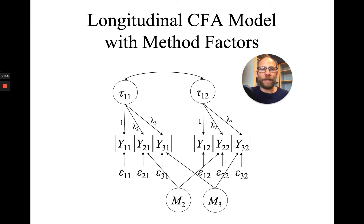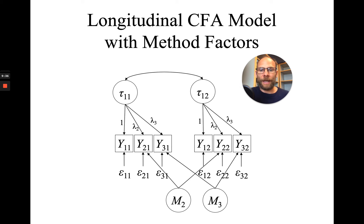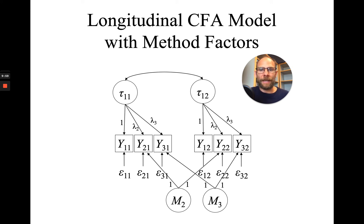These method factors are defined as residual factors, meaning they represent variance in those non-reference indicators that is stable across time but is not shared with the reference indicator. Therefore, these method factors are not correlated with the state factors. When we specify this model in programs like Mplus, we have to indicate that M2 and M3 are not allowed to correlate with the latent state factors tau1 and tau2. The loadings on the method factors can all be fixed to one because it's the same variable across time, and there is not really a reason why that loading should change — though this is not a requirement; some loadings can be freely estimated. In addition, we can estimate the correlation between the method factors in case those non-reference indicators share variance with one another above and beyond what they share with the reference variable.